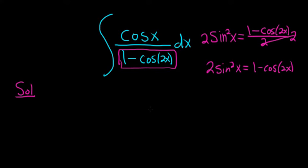So let's go ahead and make that substitution using the identity. This becomes the integral of cosine x over 2 sine squared x dx.